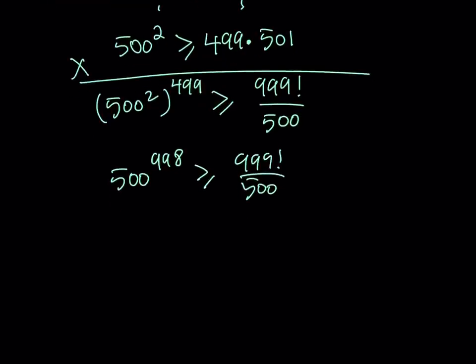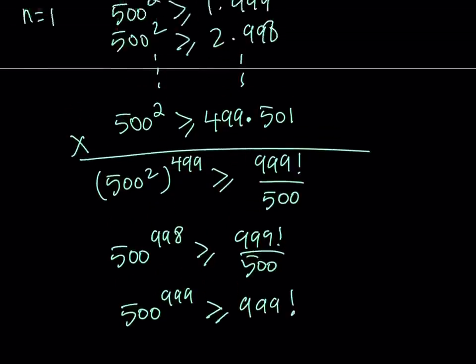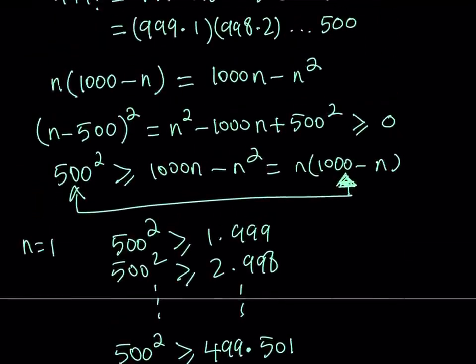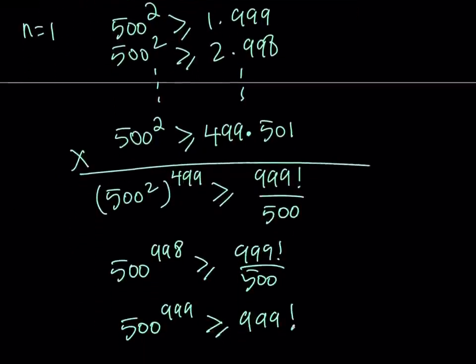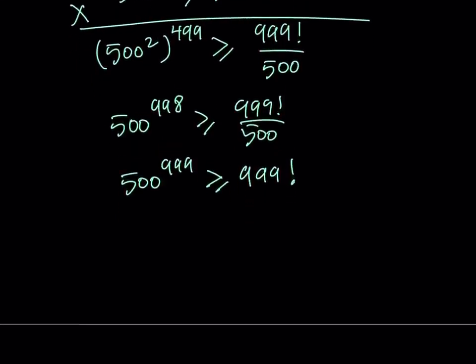This gives me 500 to the power 998 is greater or equal to 999 factorial divided by 500. If you multiply both sides by 500, which is a positive number, you get 500 to the power 999 is greater or equal to 999 factorial. Obviously, there is no way they can be equal. So we can safely say that this implies 500 to the power 999 is the greater number. That concludes our first method.